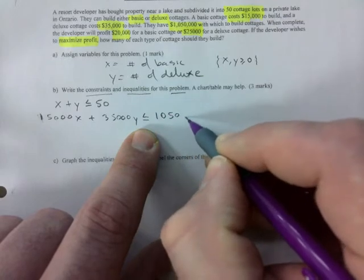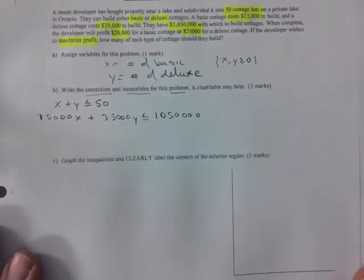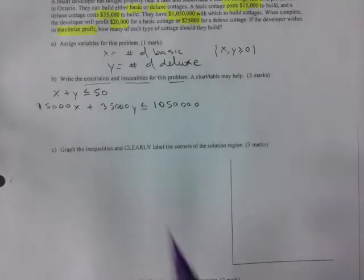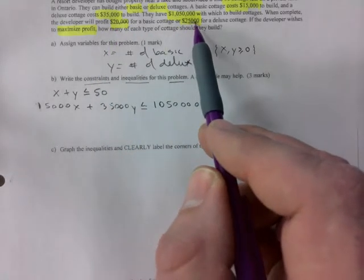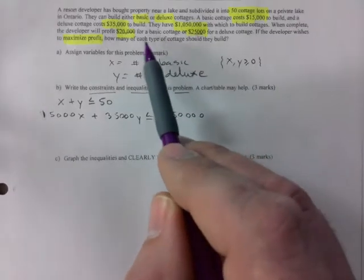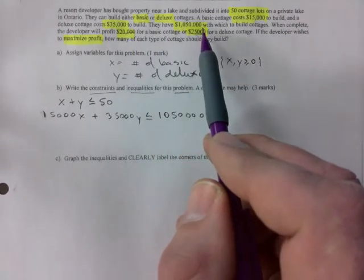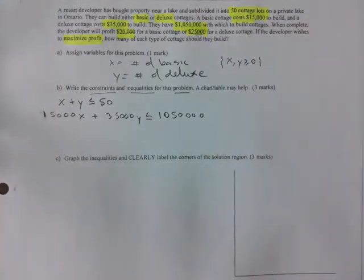That has to be less than or equal to 1 million and 50,000. That should not scare you, those numbers shouldn't scare you at all, you have a calculator. Some of you are going to want to use the $20,000 and the $25,000, that's the profit. Is there any restriction on the profit? If you read it there is none.